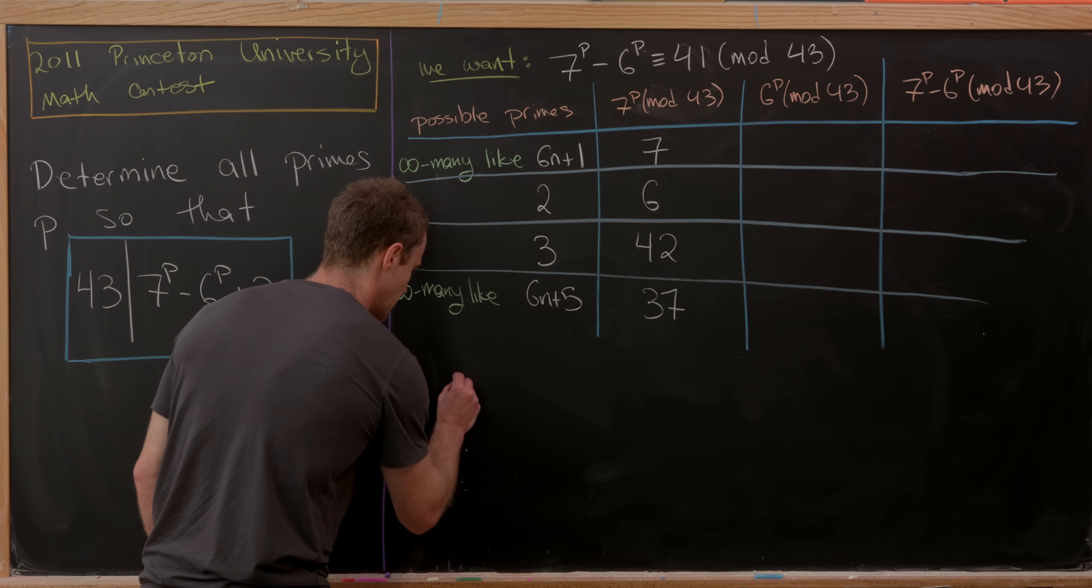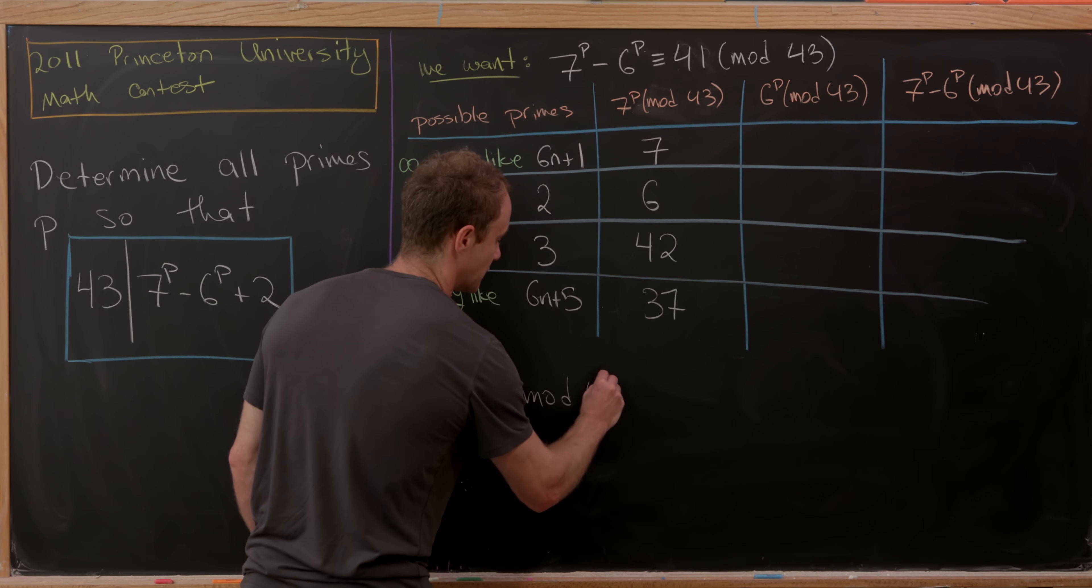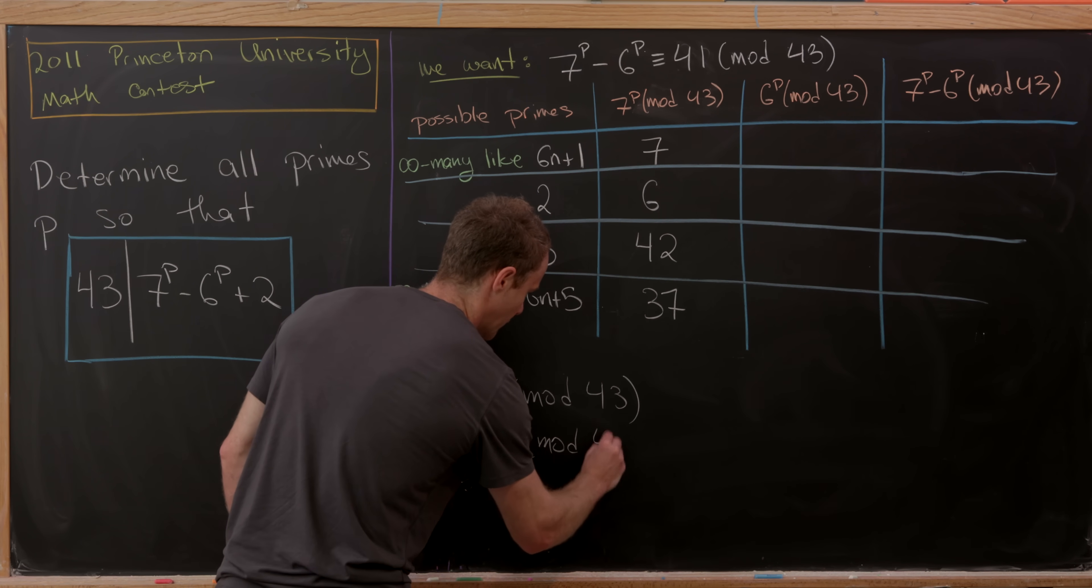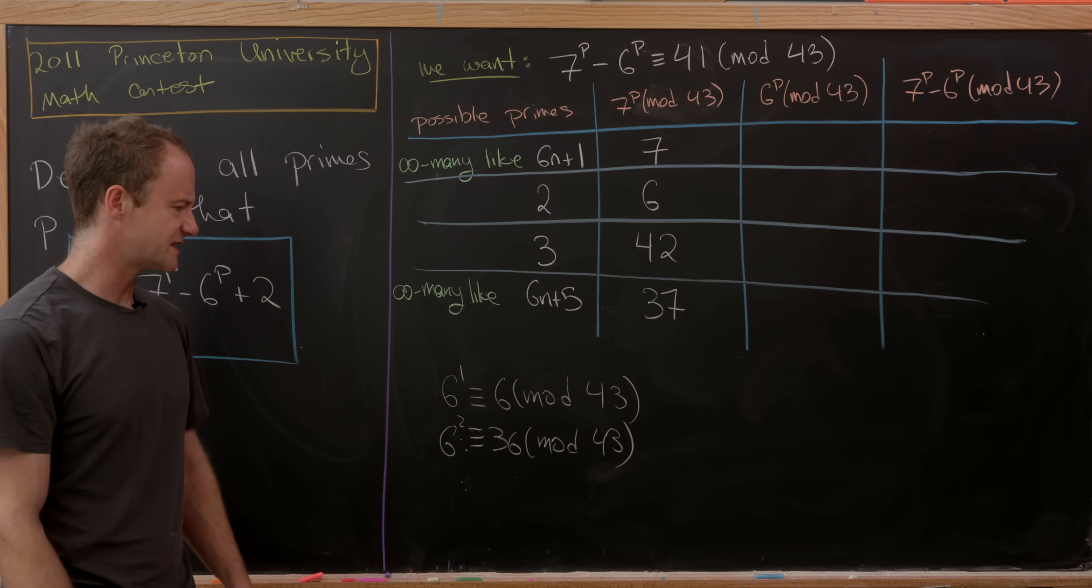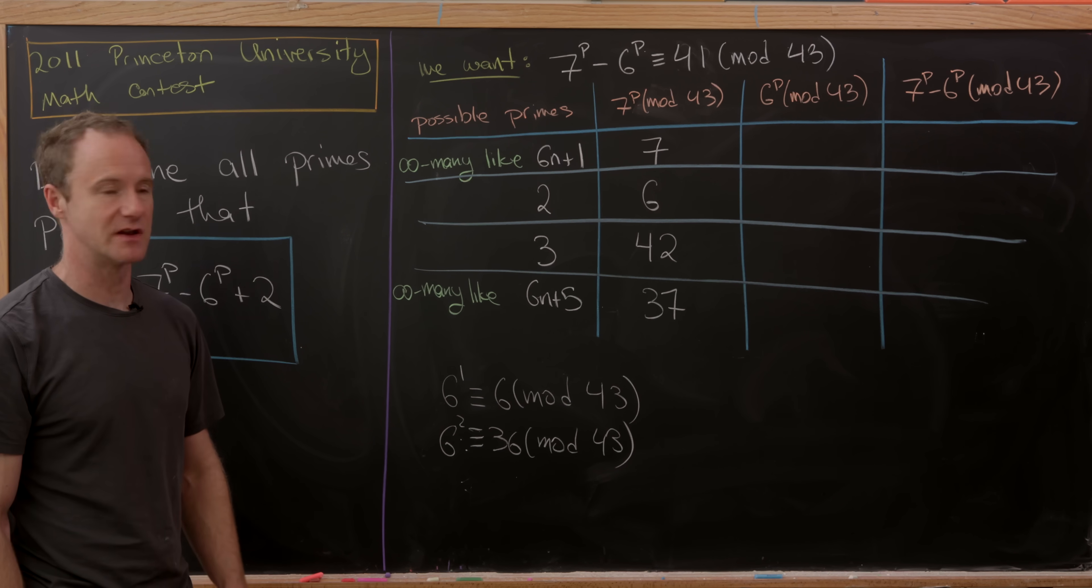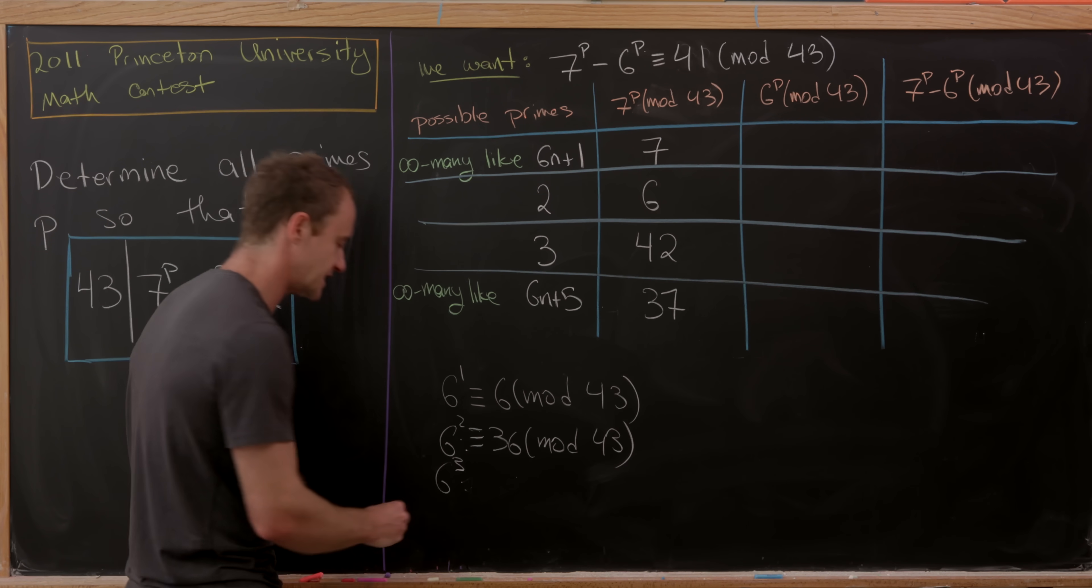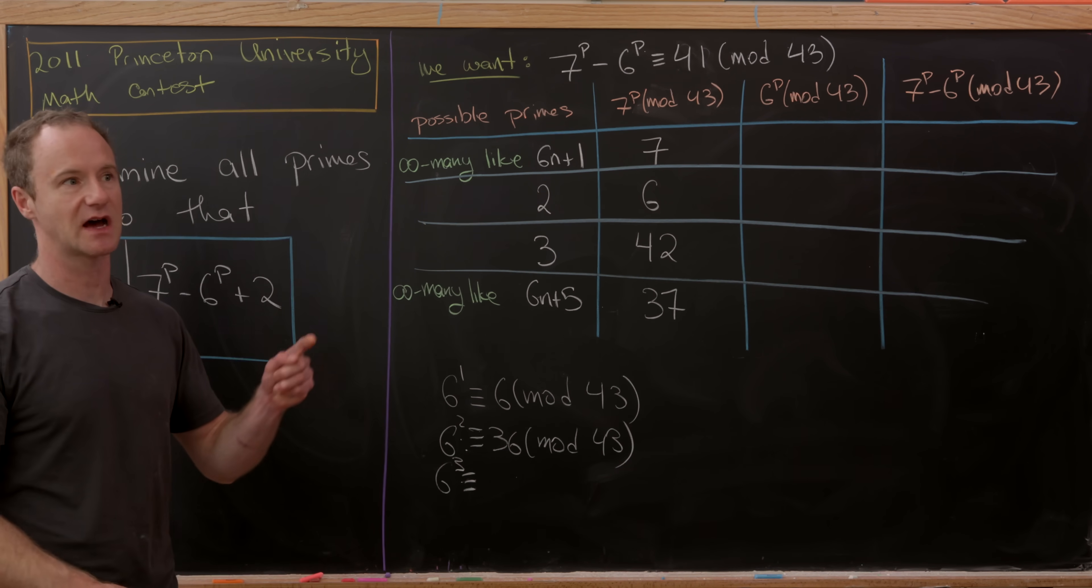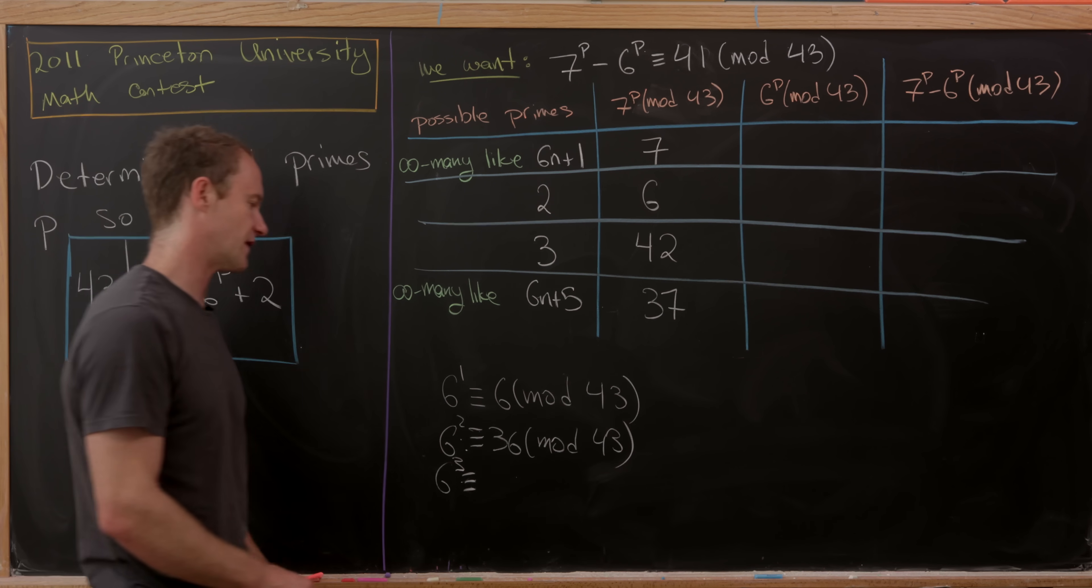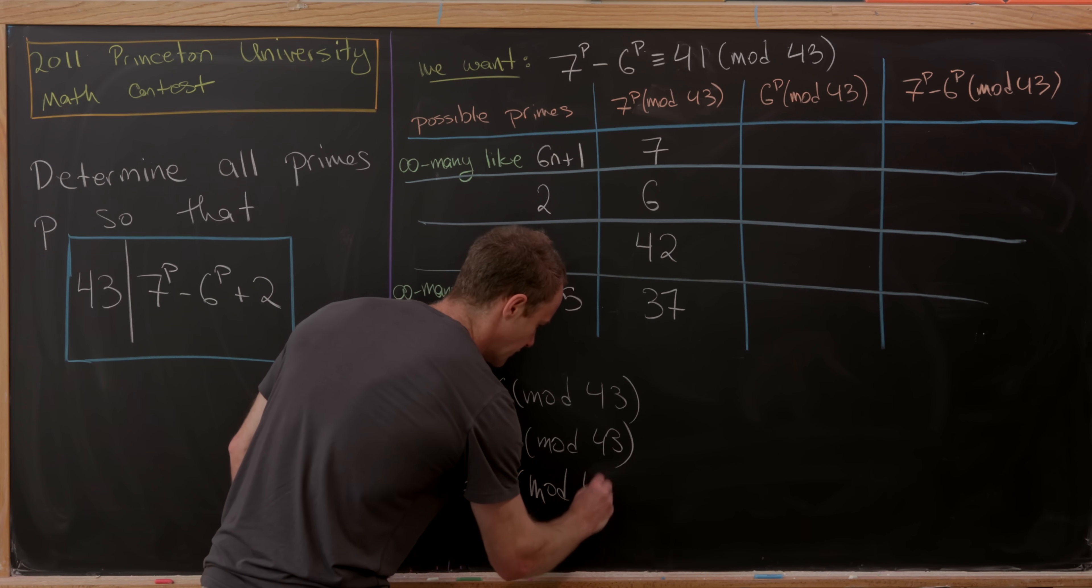Let's make a simple chart. We've got 6^1, which is congruent to 6 modulo 43. Then 6^2 is congruent to 36 mod 43. But notice that 36 is -7 mod 43. That allows us to calculate 6^3 pretty easily. 6^3 would be congruent to -7 times 6, which is -42. But -42 is simply 1 mod 43 because we add 43 to it and we get 1. So this is congruent to 1 modulo 43.